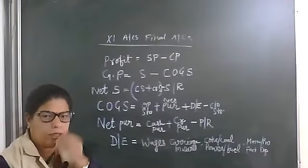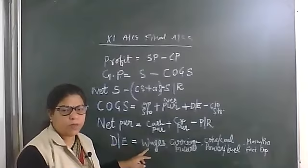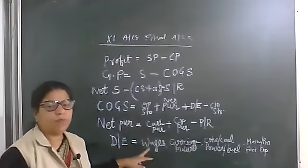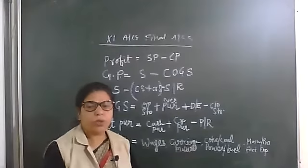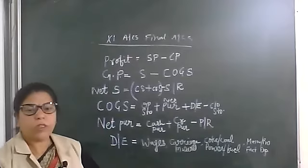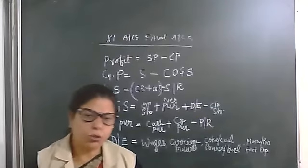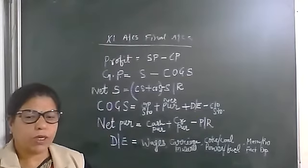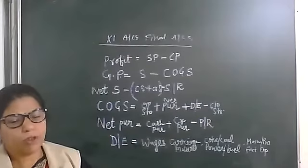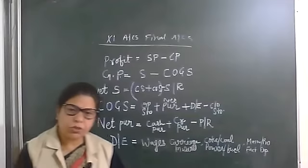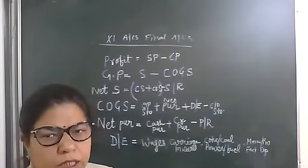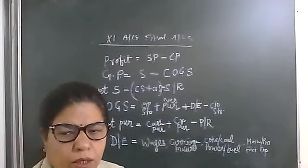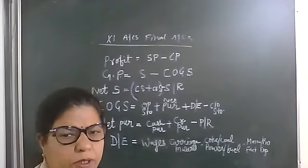To summarize, direct expenses means wages, carriage inward, coke, coal, power, fuel — all those items which are required for the manufacturing of goods — and all manufacturing, production, and factory expenses.